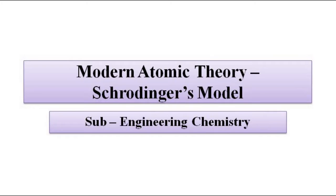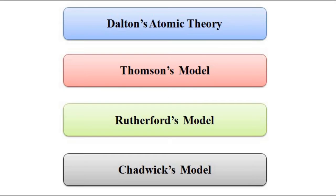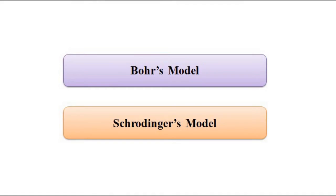Hello friends, welcome to Engineering Tutorial. We'll continue our discussion related to atomic structure. So far we have discussed various atomic models starting from Dalton's atomic theory, Thomson's model, Rutherford's model, Chadwick's model, Bohr's model, then we discussed the de Broglie hypothesis related to the wave and particle nature of the electron, and then we discussed the Heisenberg uncertainty principle.